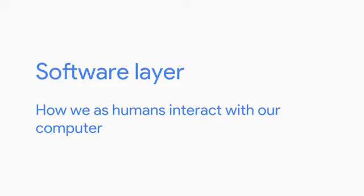The software layer is how we as humans interact with our computers. When you use a computer you're given a vast amount of software that you interact with, whether it's a mobile app, a web browser, a word processor, or the operating system itself. Later in this course we'll learn how software is installed on our systems and how we interact with different types of software.